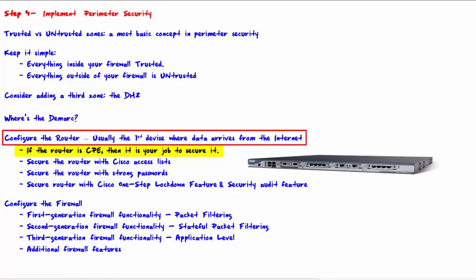Securing the router is most often done by using access lists or ACLs. Cisco access lists have both standard and extended types. Standard ACLs filter solely based on the source IP address of the packet. Extended ACLs offer more functionality — you can filter on source IP address, destination IP address, source port, destination port, and more. You may decide what source and destination IP addresses and ports are allowed to pass the router, then enforce this with an ACL. Also make sure that access to the router is properly secured using strong passwords.